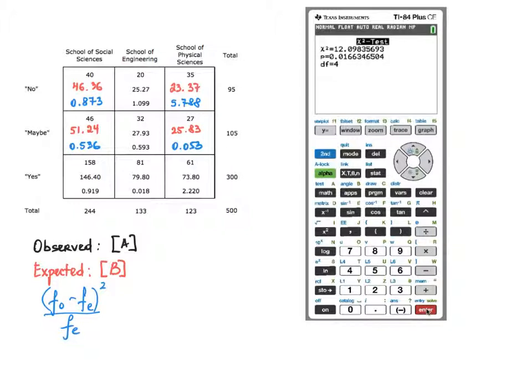Please notice that the chi-square test statistic that we computed by adding the 9 quantities coming from this formula over here. We added all these together to get the test statistic manually. We can get this number by just running this test. This test also shows you what the p-value is, which can be used if you want to use the p-value method for this hypothesis test.